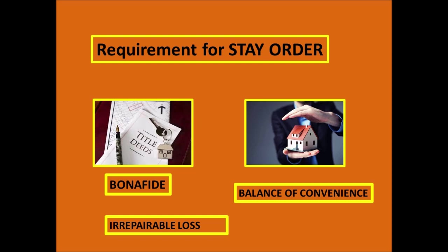Now, what documents do you need for each of the three points? For the prima facie case, you must have title deeds or property documents — it is very necessary to have proper property documents. For balance of convenience, if someone is selling your property, you should have a sale agreement or relevant departmental papers, such as documents submitted to the registrar's office, or sale deeds.